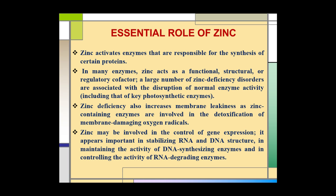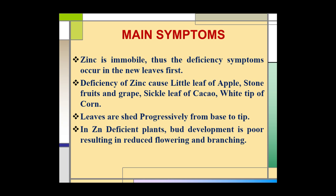Thus, zinc is very essential for the growth of plants. The main symptoms of zinc deficiency in plants: since zinc is immobile in plants, the deficiency symptoms appear in the newer leaves first. The deficiency of zinc causes various diseases in different plants.